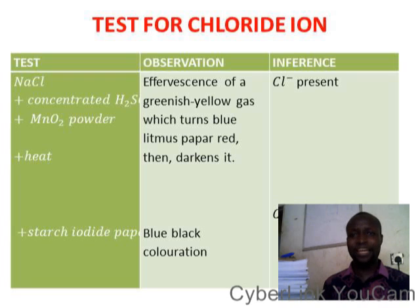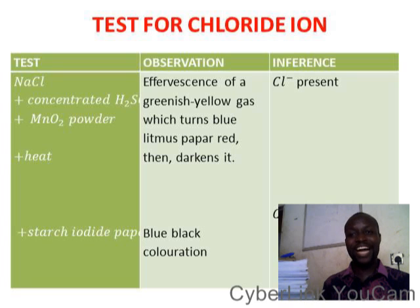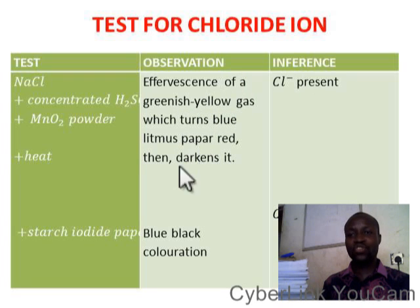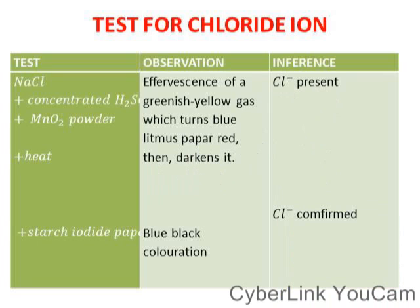Now let's look at the test for chloride ion. Chloride ion can be tested by taking sodium chloride, adding concentrated sulfuric acid followed by manganese dioxide powder, and heating the mixture. There will be a greenish-yellow gas produced, which first turns moist red litmus paper then darkens it, confirming the presence of chloride ion.